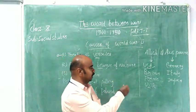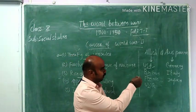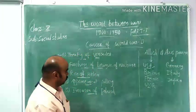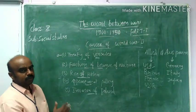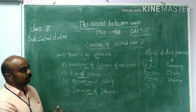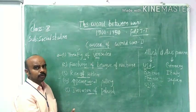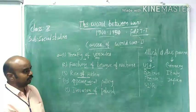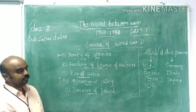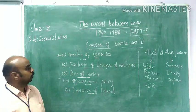USA, Britain, France, and USSR formed the Allied group, while Germany, Italy, and Japan were the Axis powers. World War II started on 1st September 1939 and ended on August 15th, 1945, with the unconditional surrender of Japan to the Allied powers — especially USA, Britain, and France — after the Hiroshima and Nagasaki incident. This is the overall brief story about the causes of World War II.